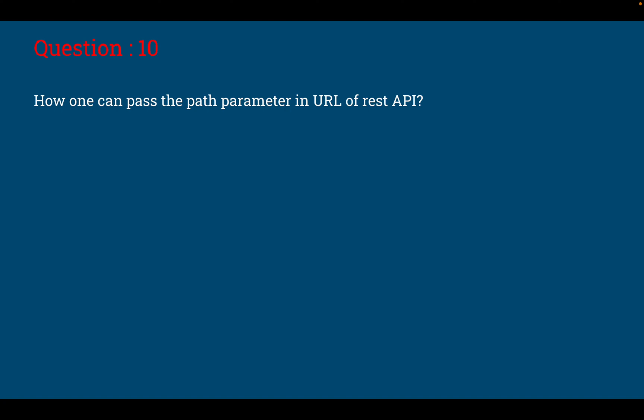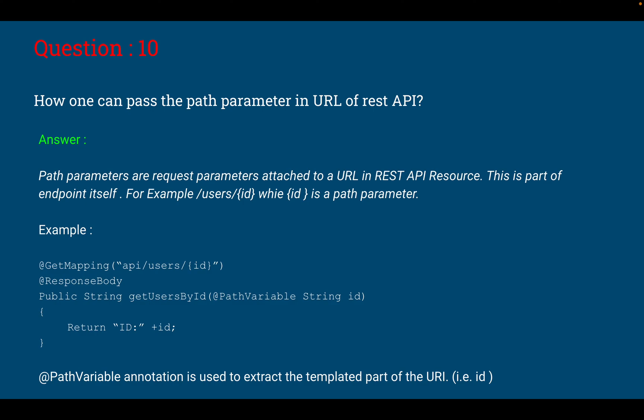Moving to question 10: how can one pass the path parameter in the URL of REST API? The answer is: path parameters are request parameters attached to the URI in the REST API resource. This is a part of endpoint itself. For example, if we have any endpoint with let's say /user/ID, where ID is a path parameter. And if I tell you about the sample code, you can see in the example below where I am passing the ID. You can see the ID in the GetMapping as well as we are passing that as a path variable. PathVariable annotation is used to extract the templated part of the URI, which is ID here in this case.